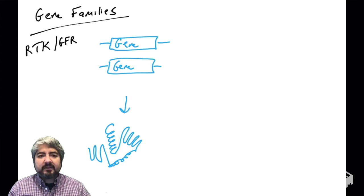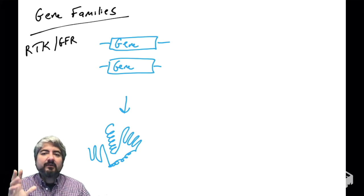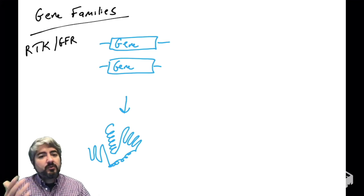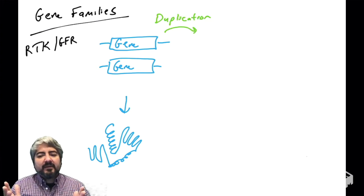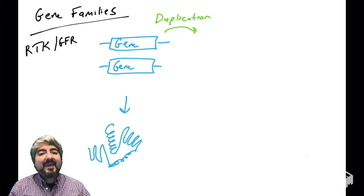Genes have the instructions to make proteins. Usually you have two copies of every gene if we're talking about a diploid organism and a gene found on an autosome, not a sex chromosome. So two copies of a gene, one maternal, one paternal. In the evolution of organisms, where do new genes come from? Gene duplication events.